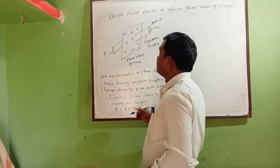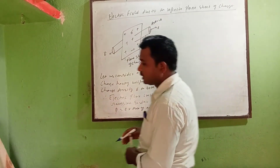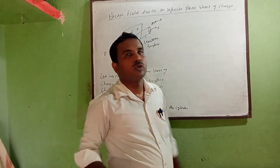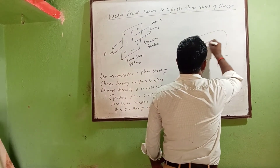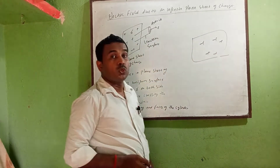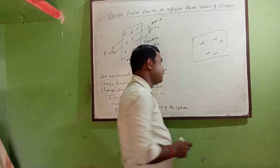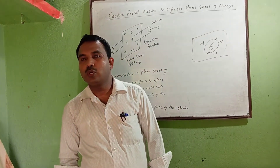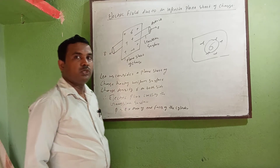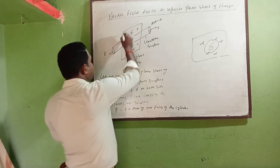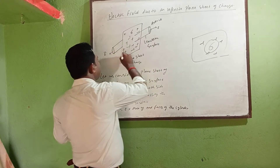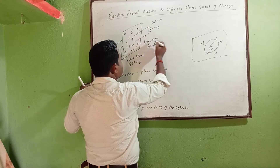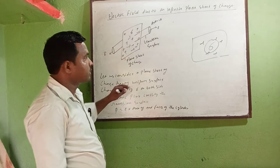Hello students, now we have another question. We need to find the electric field due to an infinite plane sheet of charge. Suppose we have this sheet with many charges distributed over it. Sigma is used to denote the surface charge density whenever charges are distributed over a surface. Suppose this surface has positive charge plus Q distributed over it with area A, and this is the Gaussian surface — this is called the plane sheet of charge.